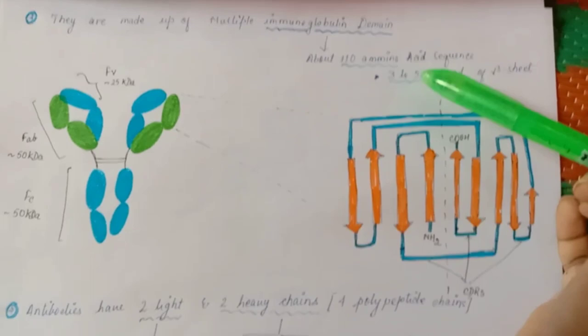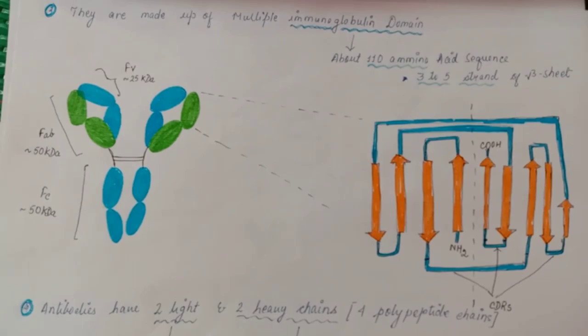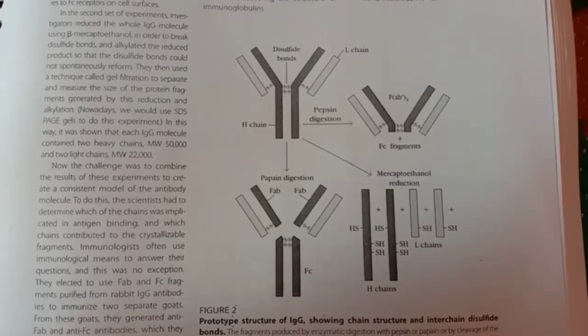Now I would prefer an image from Kuby in order to study the antibody structure. So we could see the structure clear. It's chapter three of Kuby.